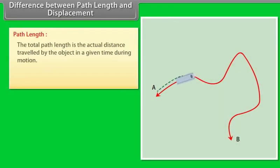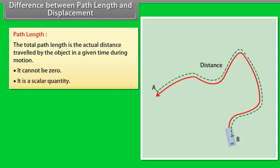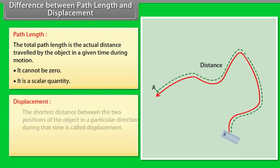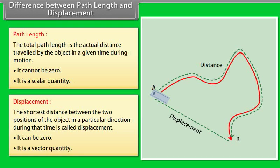Difference between path length and displacement. Path length: the total path length is the actual distance traveled by the object in a given time during motion. It cannot be zero; it is a scalar quantity. Displacement: the shortest distance between the two positions of the object in a particular direction during that time is called displacement. It can be zero; it is a vector quantity.